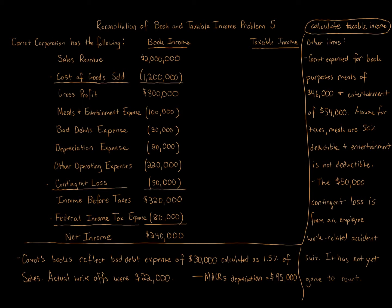Reconciliation of book and taxable income, problem five. Carrot Corporation has the following: sales revenue of $2 million, cost of goods sold of $1,200,000, giving gross profit of $800,000. Meals and entertainment expense equals $100,000, bad debt expense equals $30,000, depreciation expense equals $80,000, other operating expenses equal $220,000, contingent loss equals $50,000, income before taxes of $320,000, federal income tax expense of $80,000, and net income of $240,000. All those numbers are book income on the books of Carrot Corporation.